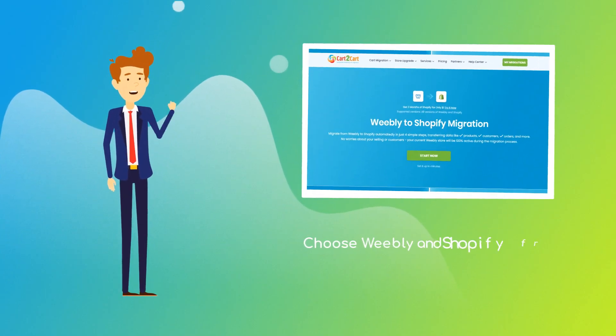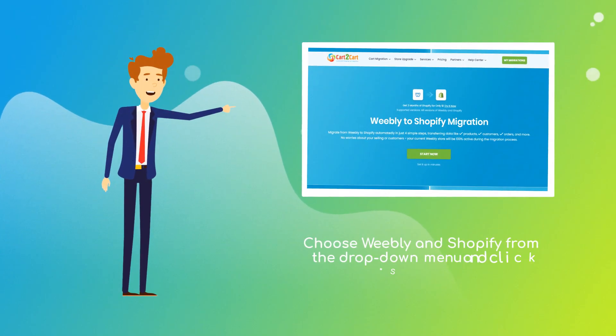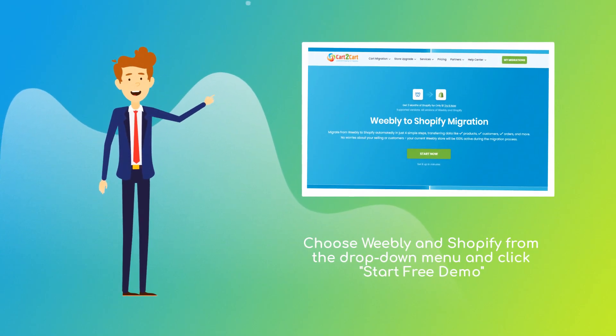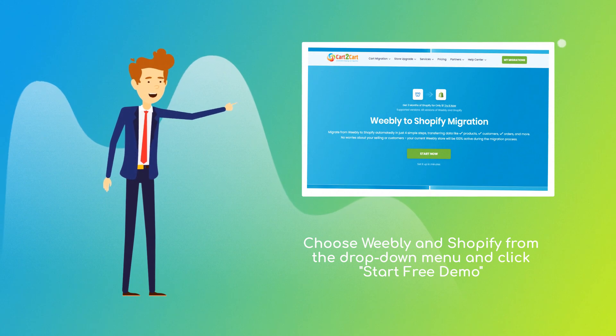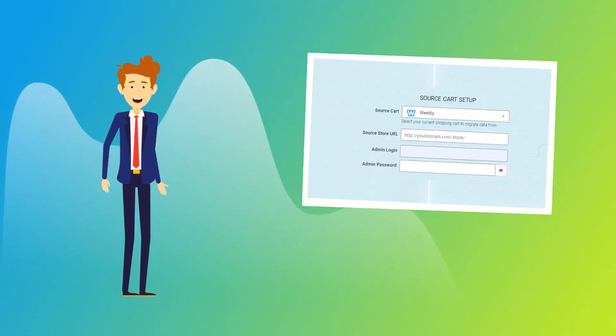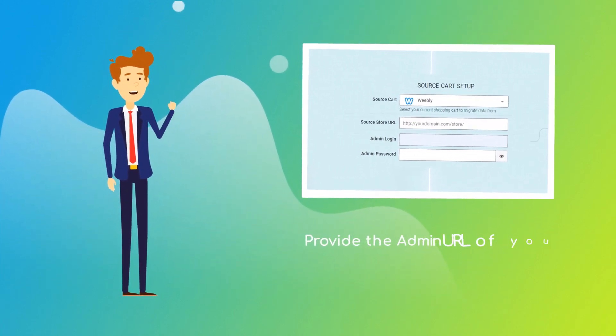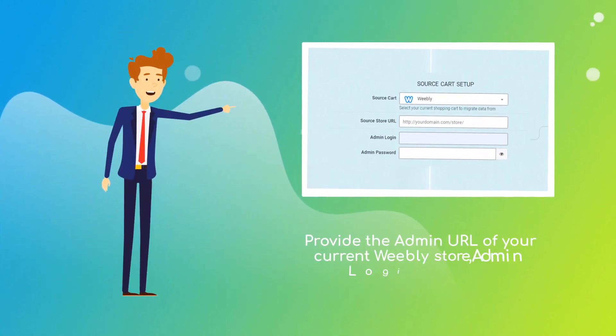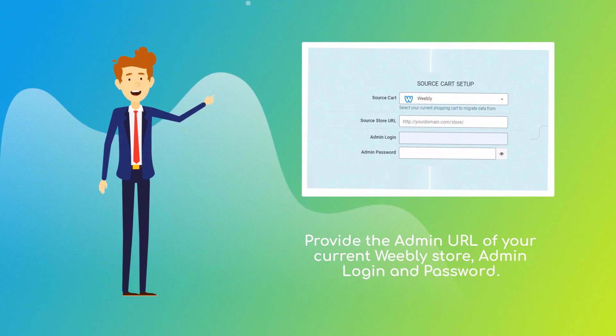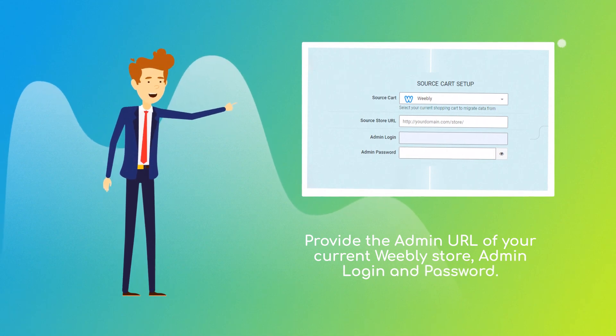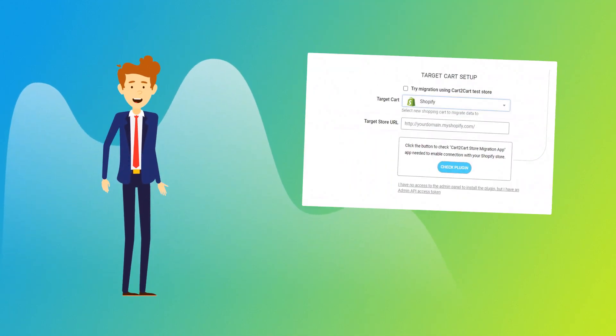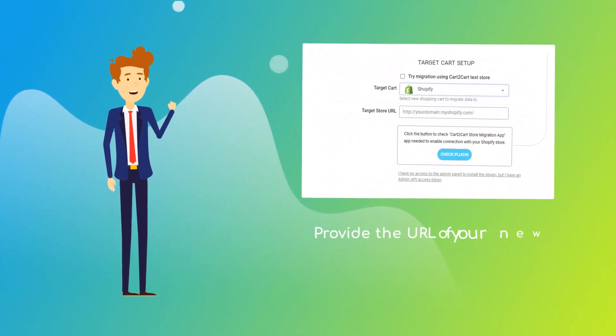Choose Weebly and Shopify platforms from the drop-down menu and click Start Free Demo. When done, provide the admin URL of your current Weebly store, along with your admin login and password.